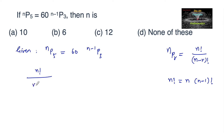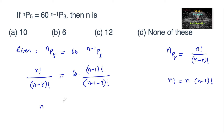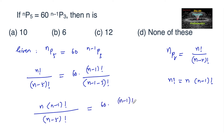We can write n factorial upon n minus 5 factorial, which is equal to 60 times n minus 1 factorial upon n minus 4 factorial. n factorial can be written as n into n minus 1 factorial, so we split this as n into n minus 1 factorial upon n minus 5 factorial, equal to 60 times n minus 1 factorial upon n minus 4 factorial. We can cancel n minus 1 factorial in the numerator.